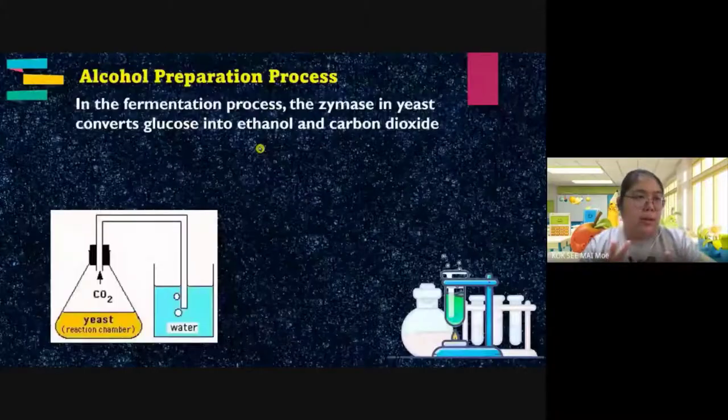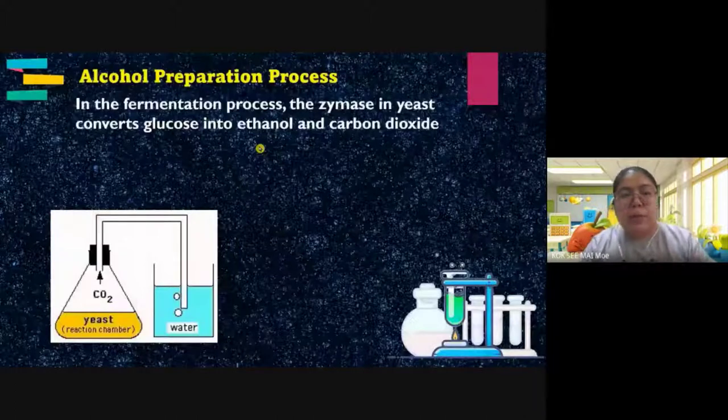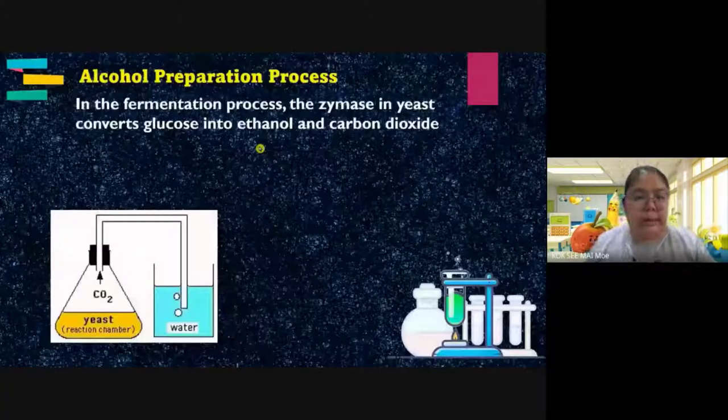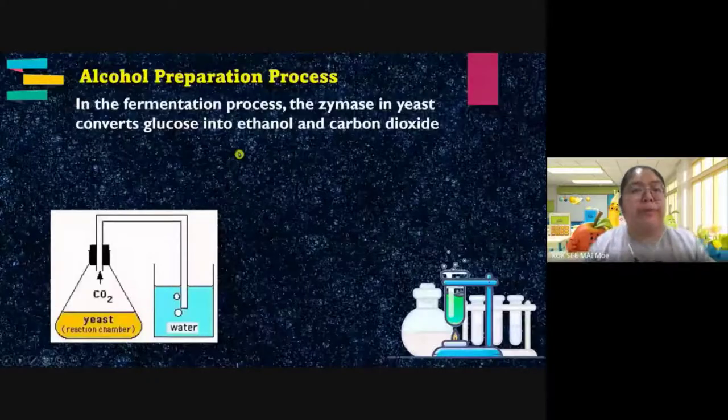For example, like our body when we eat food, the enzymes help to separate and digest the bigger parts into smaller parts. Similarly, the enzyme zymase from yeast converts glucose into ethanol and carbon dioxide — simpler substances separated from glucose. You can see this in the diagram: yeast contains enzyme zymase, which reacts to produce CO₂ and ethanol.